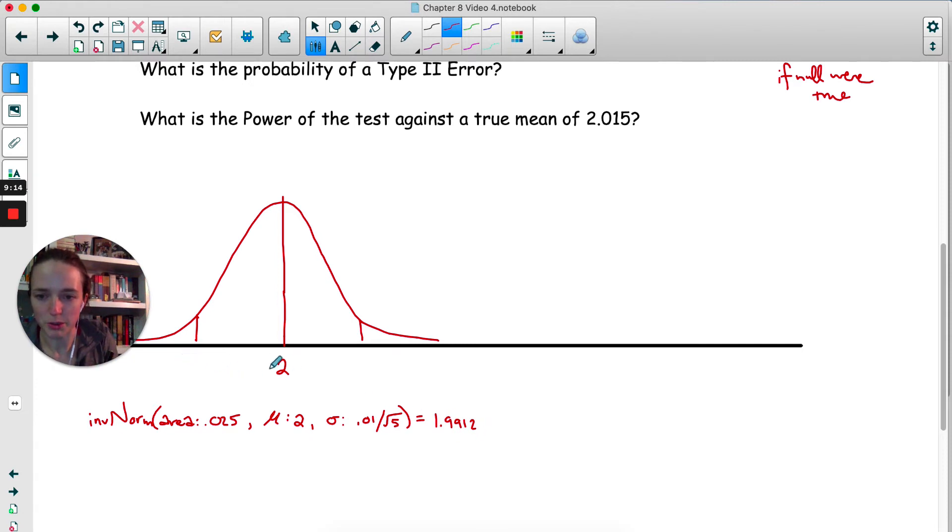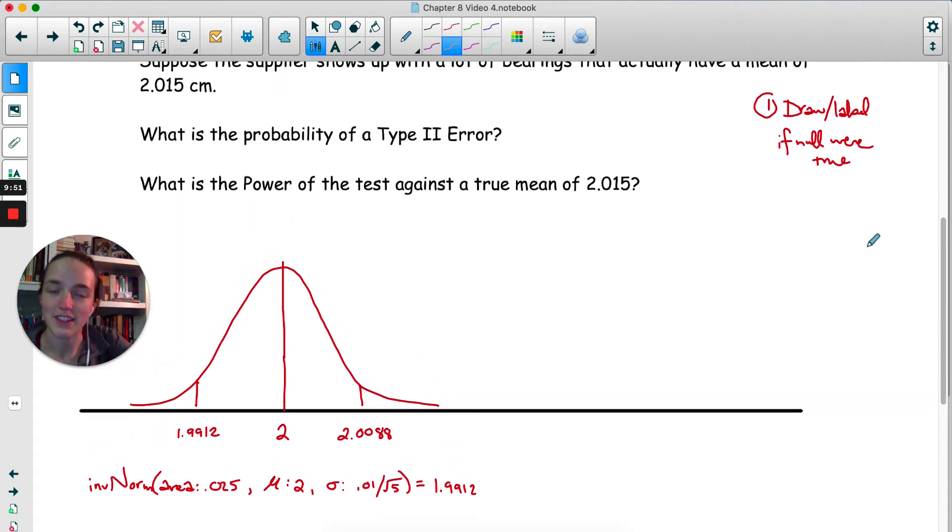I'm going to go out four decimal places. Just because we're so close to 2, we need to be a little bit more accurate than just like one or two decimal places. And then I don't have to do the work to get to the other one. I could just do 2 minus that and then add that on to 2. So same distance here, it's symmetrical. So that was step one. Draw as if the null were true and label as if the null were true.